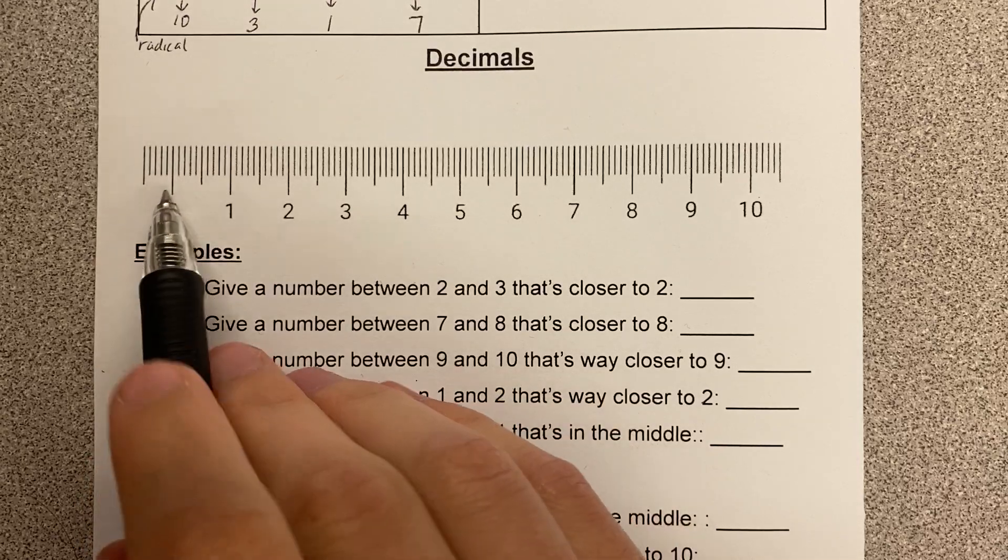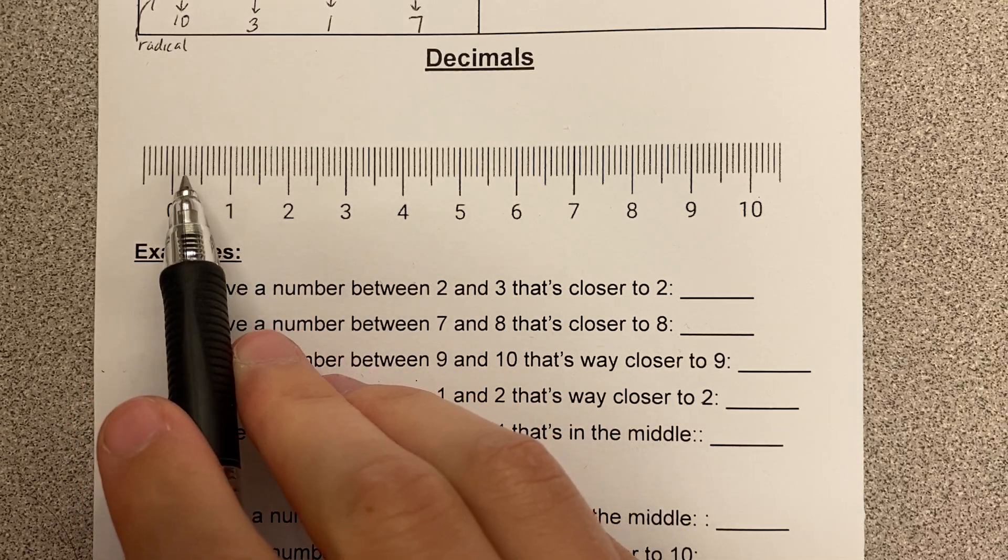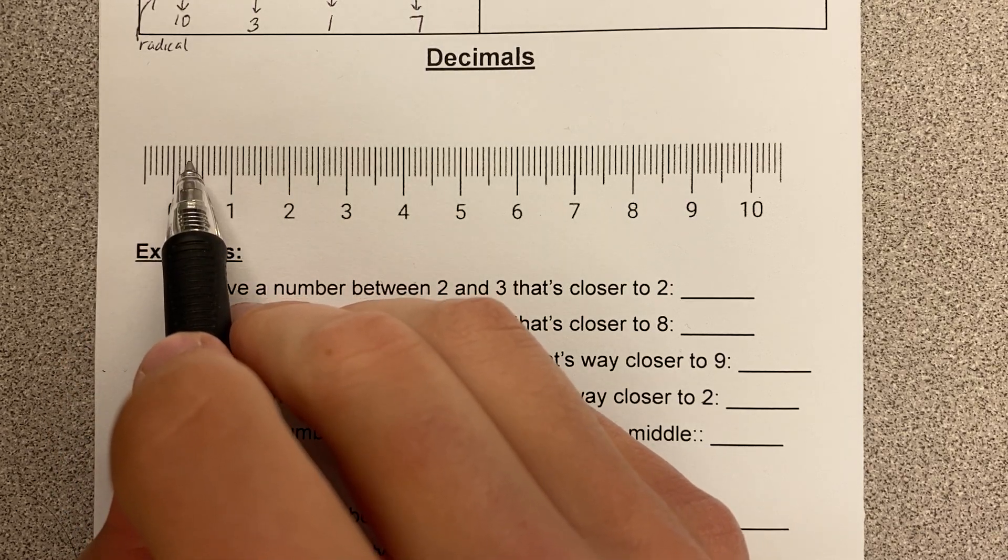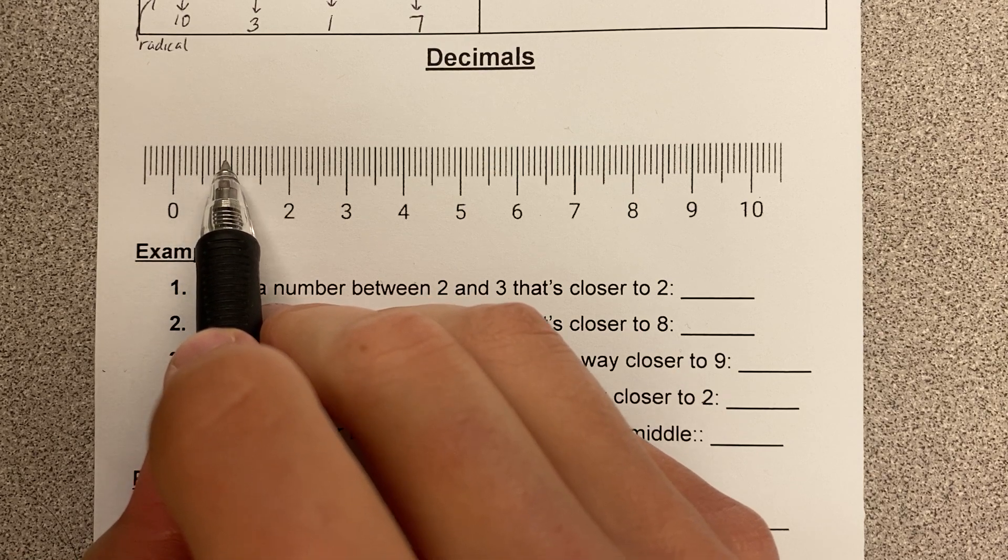Okay, so let's just look at this number line. Here's the number zero. Here's the number one. In between zero and one, there are numbers. In fact, there are infinite numbers, but look, this is 0.1, 0.2, 0.3, 0.4, 0.5, 0.6, 0.7, 0.8, 0.9, 1.